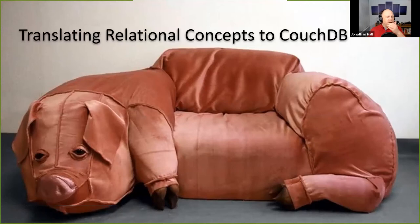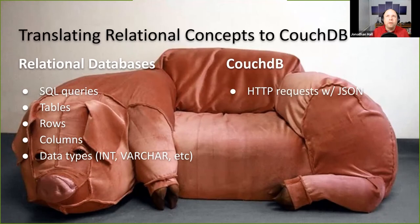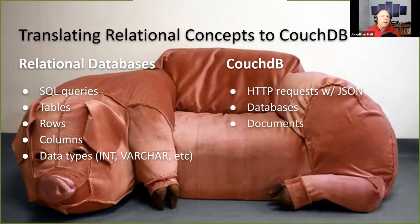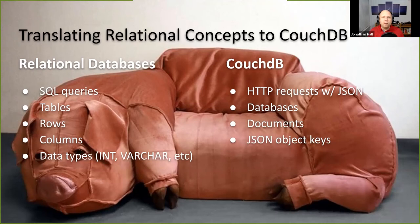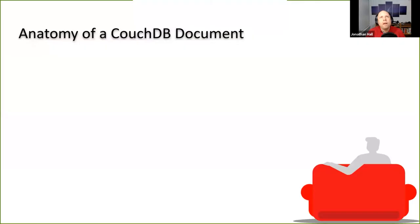For those familiar with relational databases, here's a translation to CouchDB concepts: an SQL query becomes an HTTP request with a JSON payload; a collection of tables becomes a collection of databases; rows of data become documents — literally JSON objects; columns become JSON object keys, which can be nested; and whatever data types your database supports become whatever data types JSON supports — objects, arrays, numbers, etc.